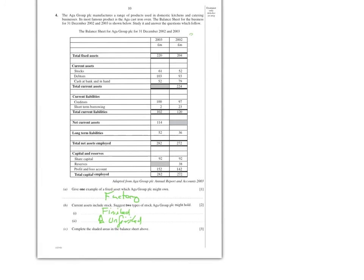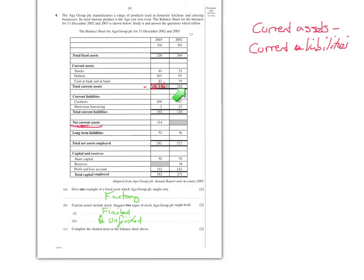I've got to fill in the shaded bits - three shaded bits. The first one is total current assets: add up 61 plus 103 plus 52, which adds up to 216. The next one is net current assets - that means current assets take away current liabilities. Use the other year to help you: 216 take away 102 makes 114. So for this year it'd be 224 take away 120, which equals 104.